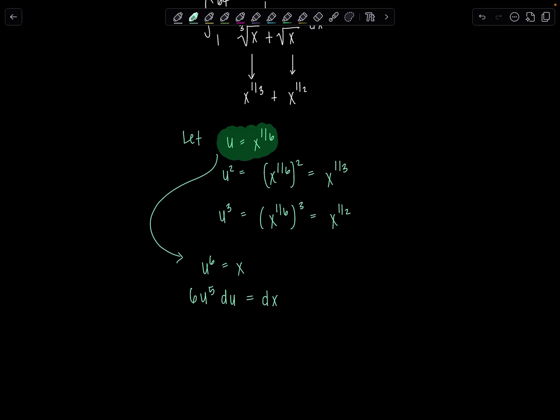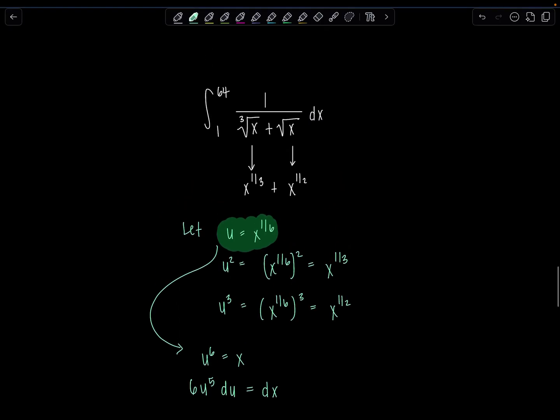Now, the only other thing I need to do before I can proceed with this substitution is change my limits of integration. Currently, the limits here, 1 and 64, those belong to the variable of the integral, which is x. So I need to figure out what the limits are in terms of u. Come right here to where we decided what our substitution was going to be and substitute them in for x.